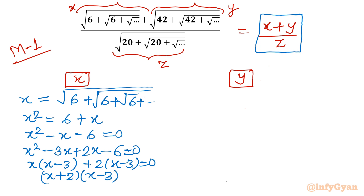So factorization gives (x plus 2)(x minus 3) equals 0, giving two values: x equals negative 2 and x equals positive 3. We reject the negative value since a square root cannot be negative, so x equals 3 is accepted.